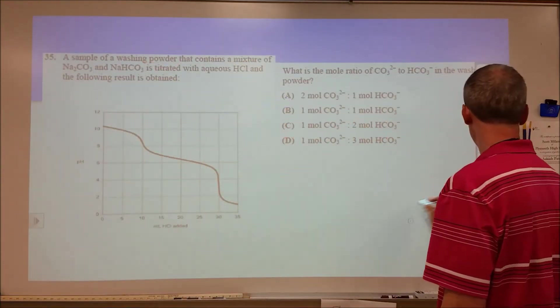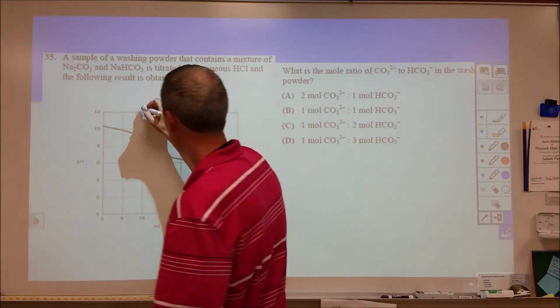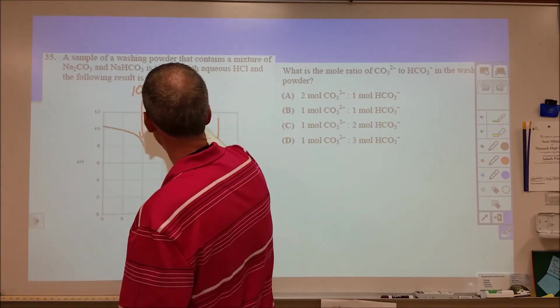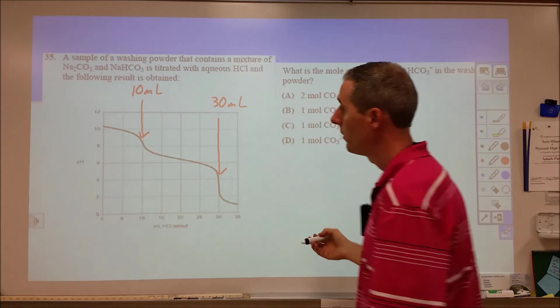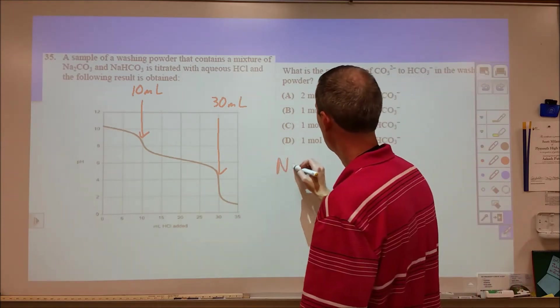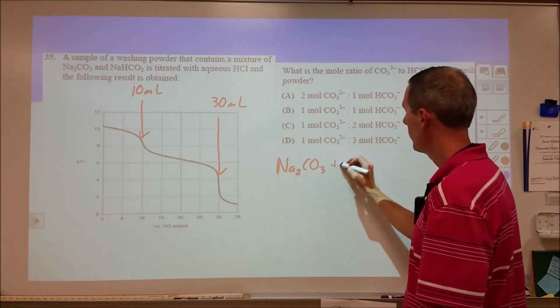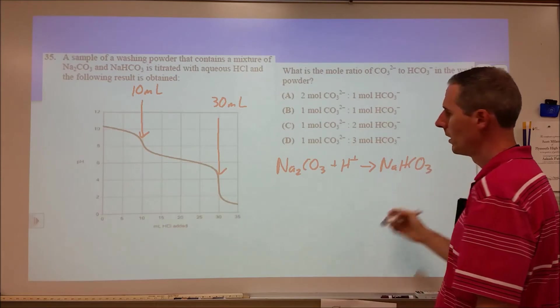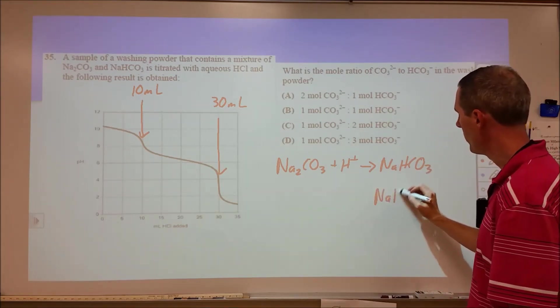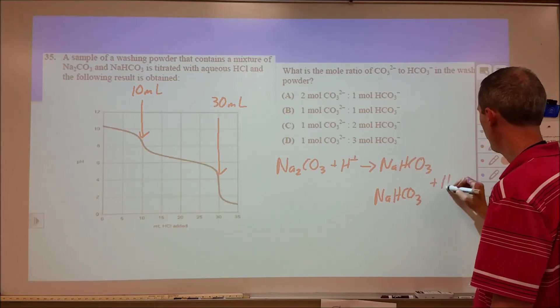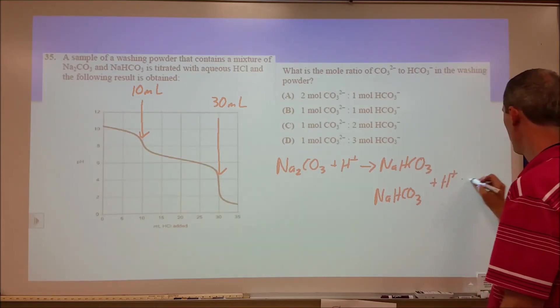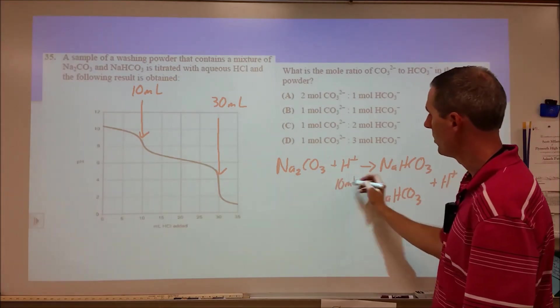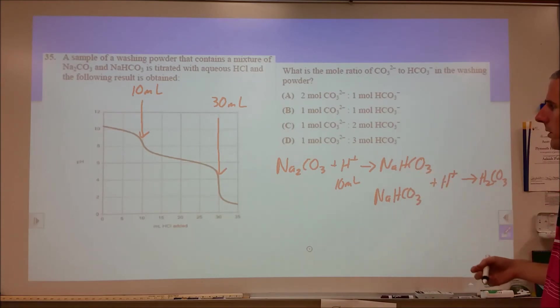Problem 35 is a nice trick question when you're in the middle of a test. We get an equivalence point here and an equivalence point here. This is after 10 milliliters have been added, and this is after 30 milliliters. Now we've got two reactions going at the same time. We have sodium carbonate that's going to react with H+ to form sodium bicarbonate. And then additionally, we had even more sodium bicarbonate from before, and those two are both going to react with H+ to form carbonic acid.